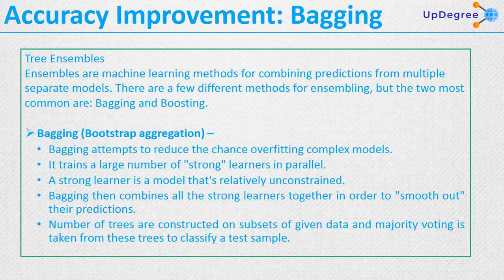A strong learner is a model that has relatively few constraints — fewer constraints on splitting, on how much depth to move into the decision tree, and so on. It is a model where fewer constraints are assigned. Bagging then combines all the strong learners together in order to smooth out their respective predictions, giving one ensembled result.